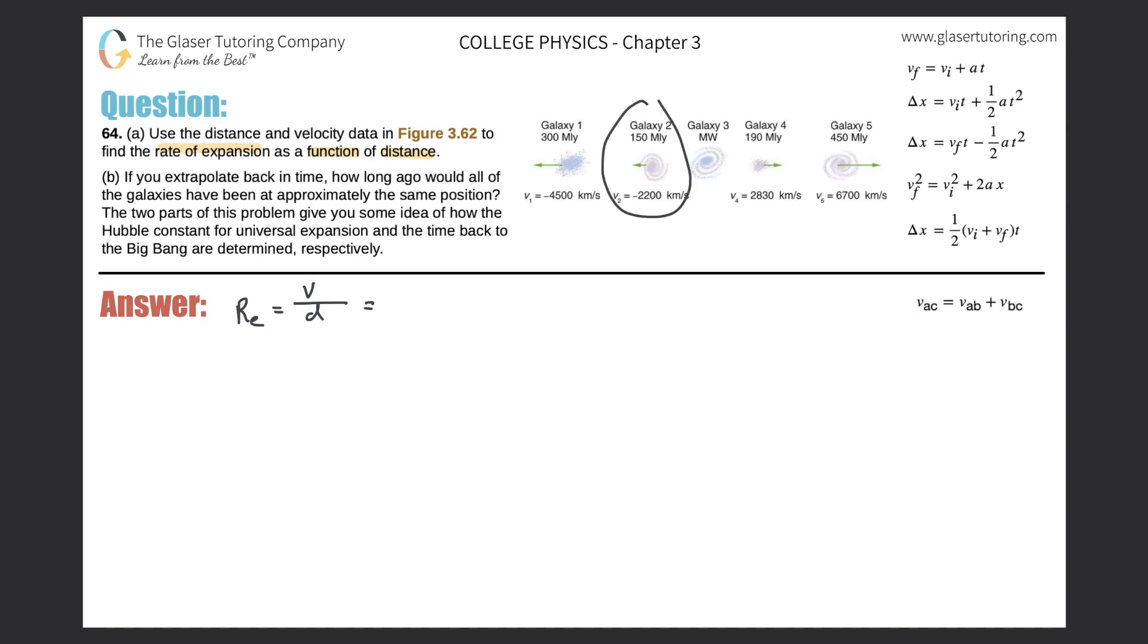Let me take galaxy 2 as our first case. This would be negative 2,200 kilometers per second, divided by 150 million light years. When we divide the two, we get negative 2,200 over 150, which is negative 14.7. It's negative because it's moving to the left relative to galaxy 3. This would be kilometers per second per million light years.